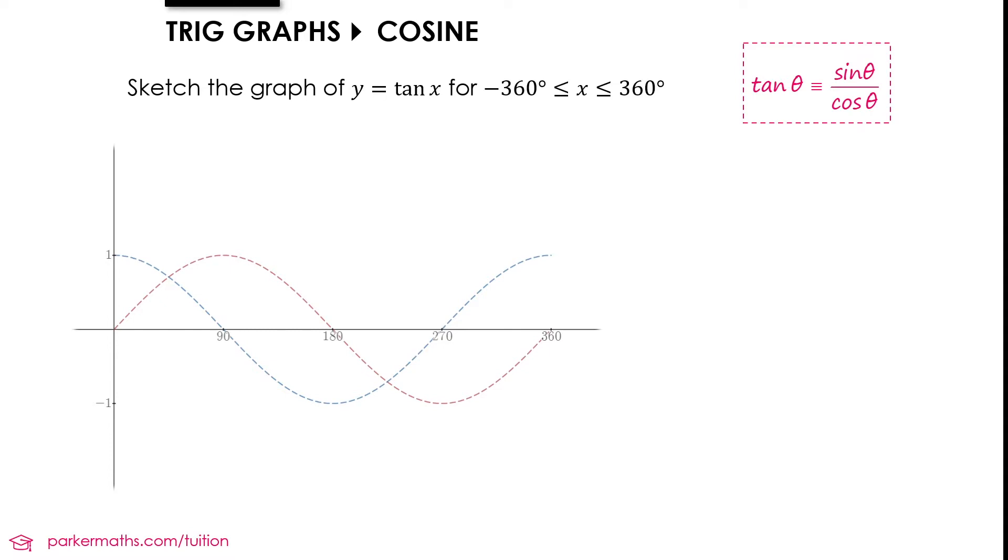To start our graph of tan x, we're going to plot a few points. When x equals zero, sin x is zero and cos x is one, so tan x equals zero over one which is zero. At x equals 180 degrees, sin x is zero and cos x is negative one, but zero over negative one is still zero. At 360, sin x is zero and cos x is one, so tan x equals zero. That's three points our curve will go through.